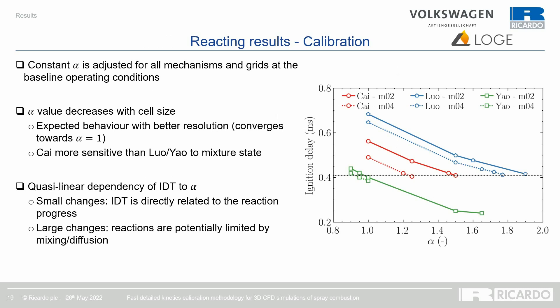For calibrating the combustion simulation, the constant alpha is adjusted for all mechanisms and grids at the baseline operating condition. In all cases, when the grid goes from coarse to fine, the value of alpha decreases — the expected behavior since fewer scales are unresolved on a finer grid. The Kai mechanism appears the most sensitive to grid size compared to the Luhr and Yao mechanisms, and there is a quasi-linear dependency of the ignition delay time with the calibration parameter alpha.